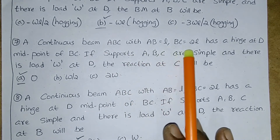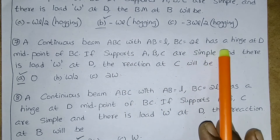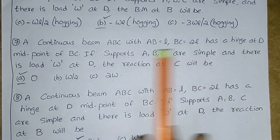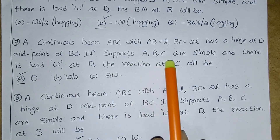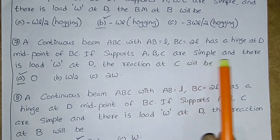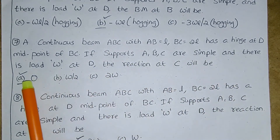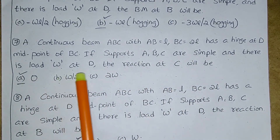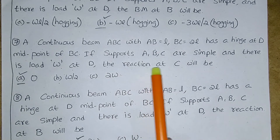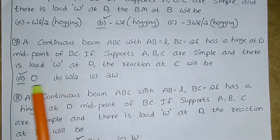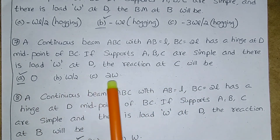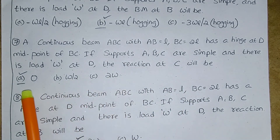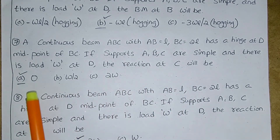Next: for the same continuous beam ABC with AB = L and BC = 2L, hinge at D midpoint of BC, supports ABC are simple and load w at D, the reaction at C will be: 0, w/2, or 2w. The correct answer is 0.